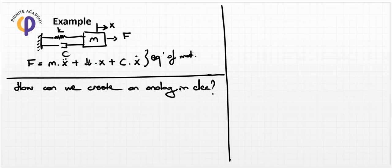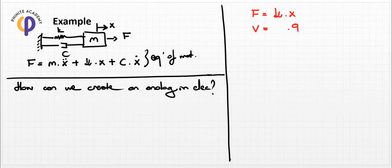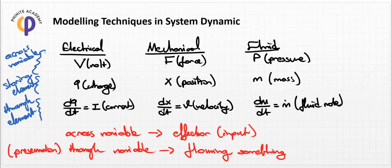If we have the force parameter related to k times x, from the analogy table we can write it in electrical terms: force is analogous to voltage, and x is directly related to q (charge). This comes from the x-to-q and f-to-volt mappings in the analogy table.